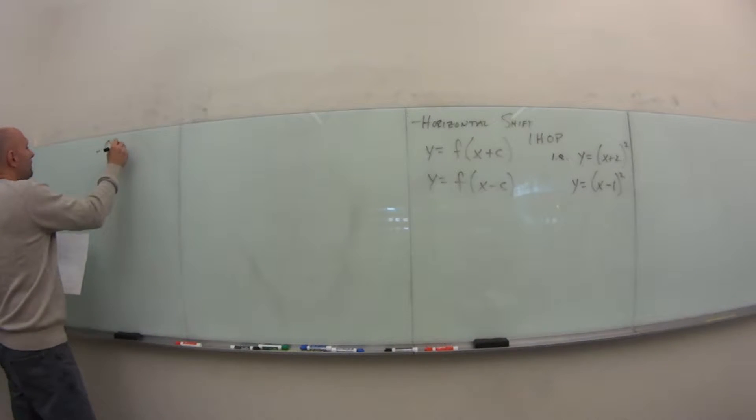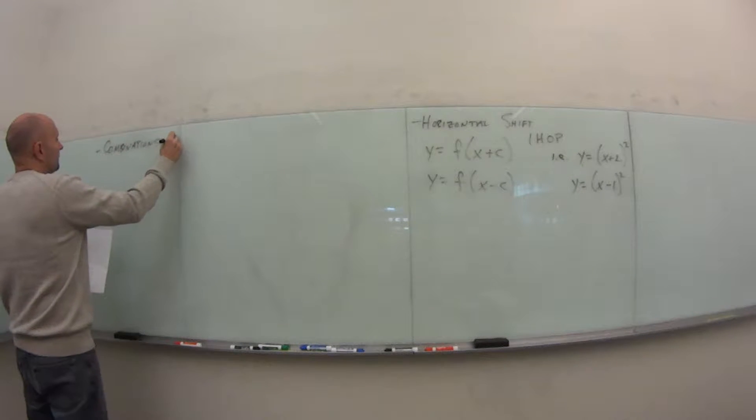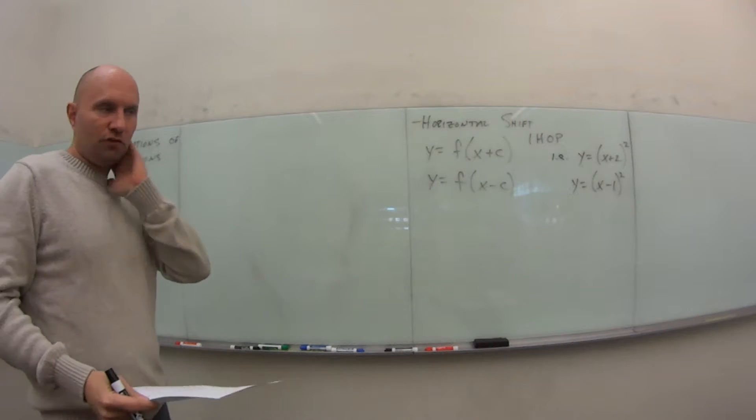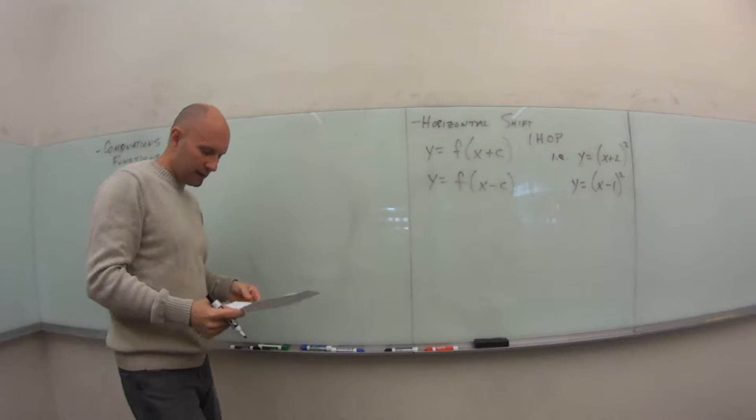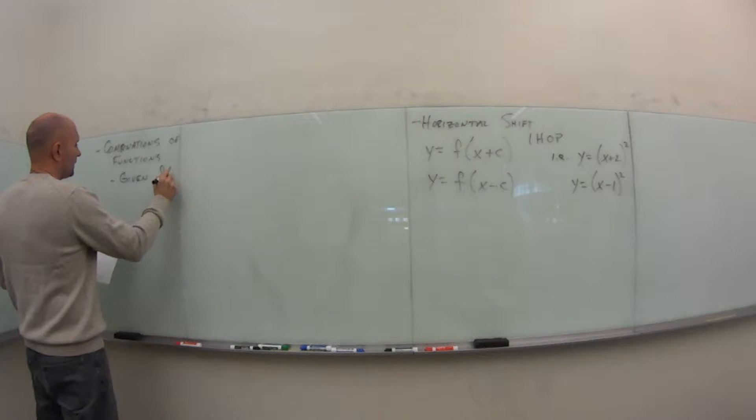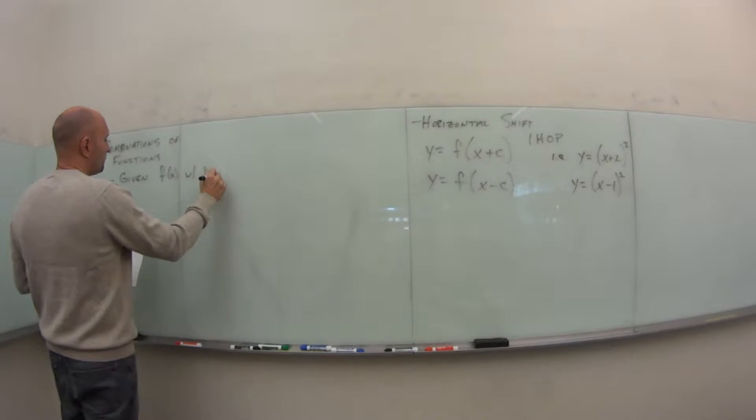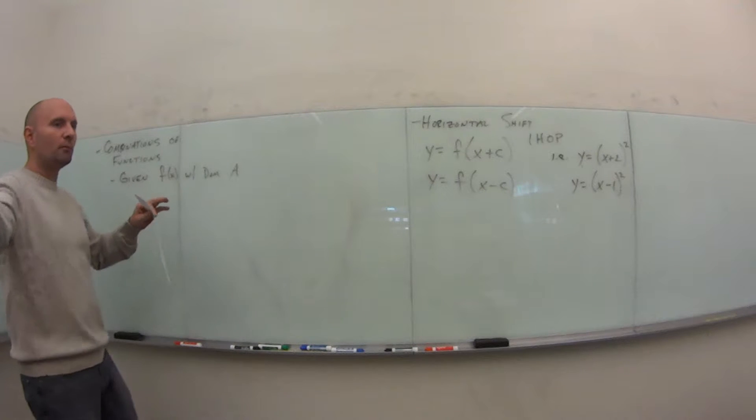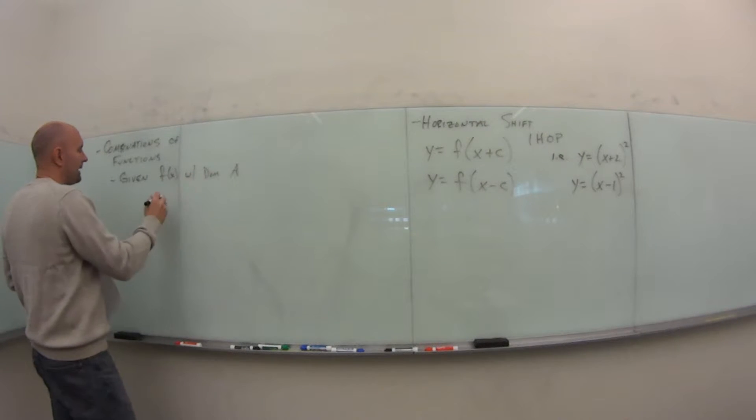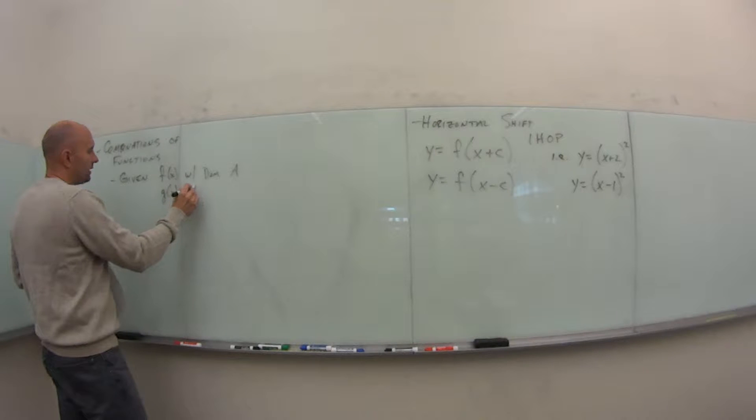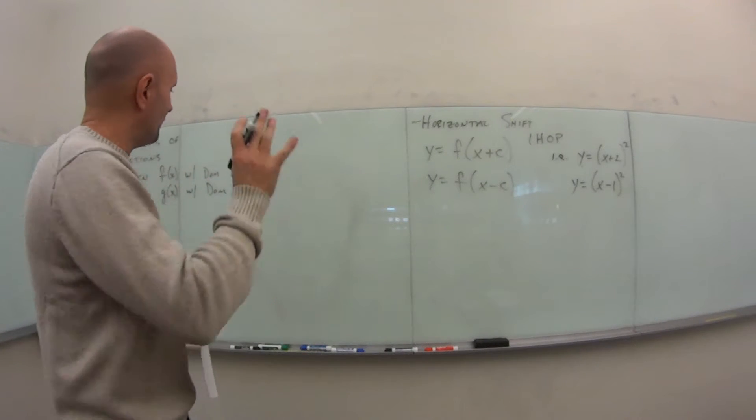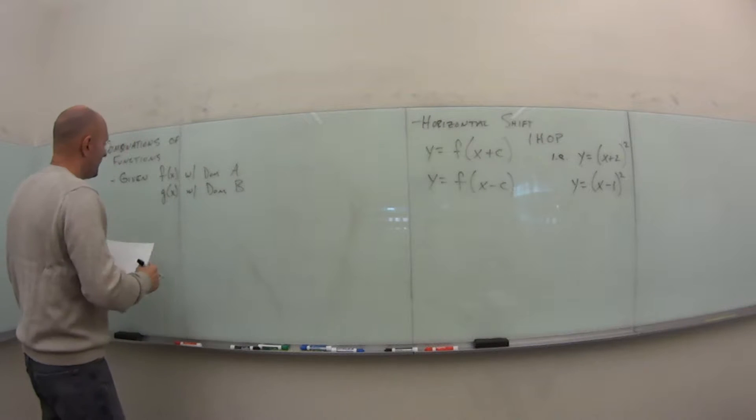We have combinations of functions. And specifically, these are our algebraic combinations: plus, minus, multiply, divide. So let's say we have the following. If we're given f of x with domain, we'll call it a, some set a. Maybe it's all real numbers. Maybe if my function is a square root, it's just the positive numbers. But it has that as its domain, a. And another function, g of x, with domain, let's call it capital B. It might be the same as a, it's probably different. But it has its domain as B.